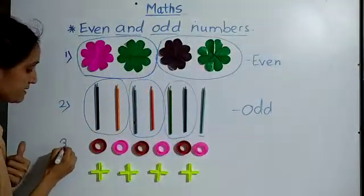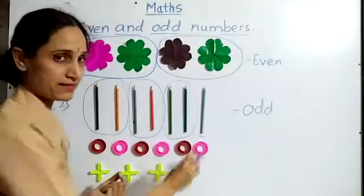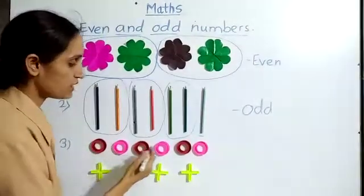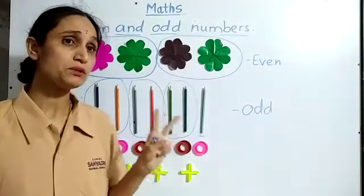Now third example. Here I have some rings. Let's count the rings. 1, 2, 3, 4, 5 and 6. Now we will group them into 2.